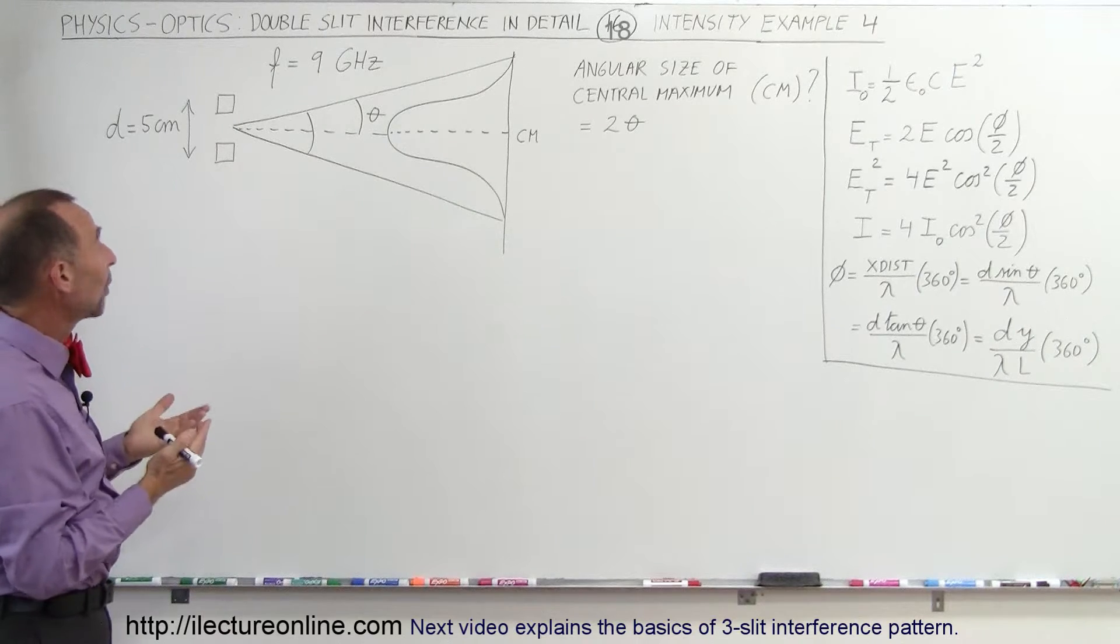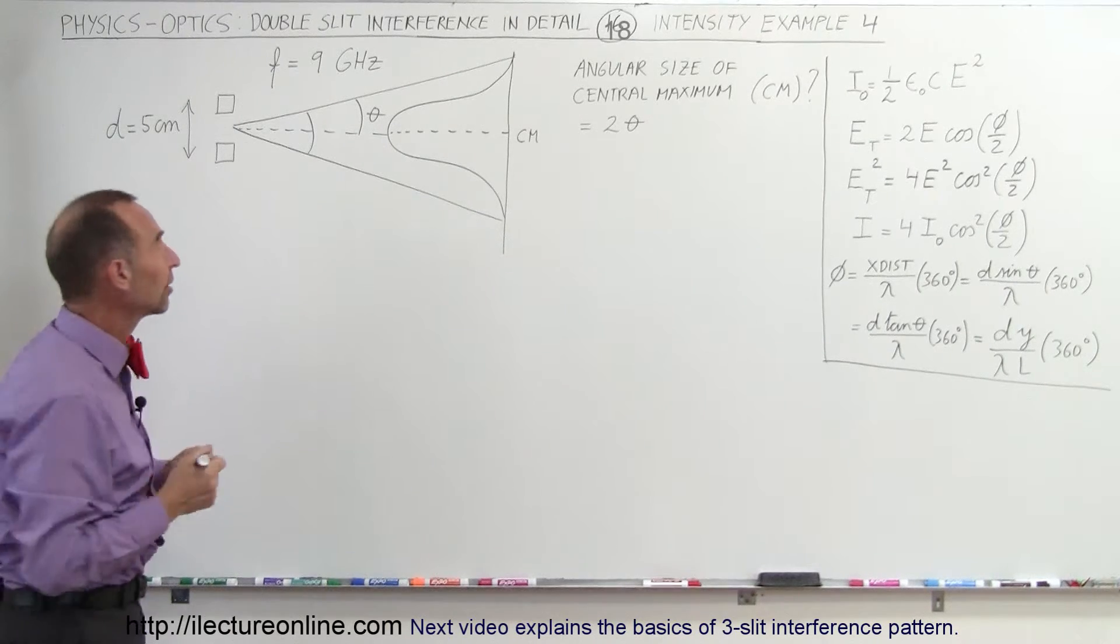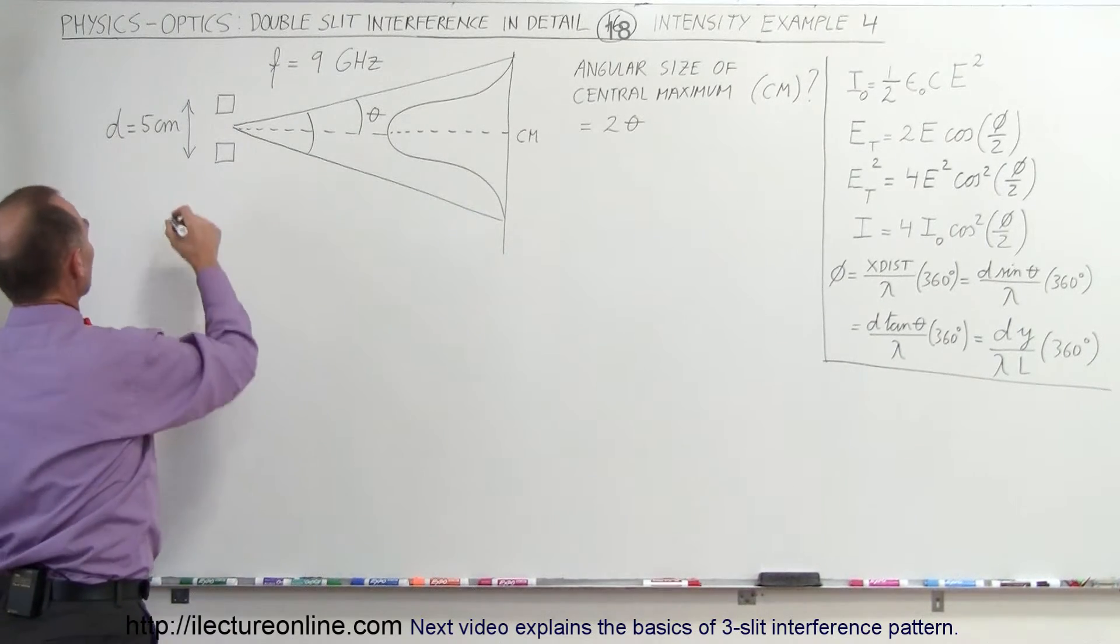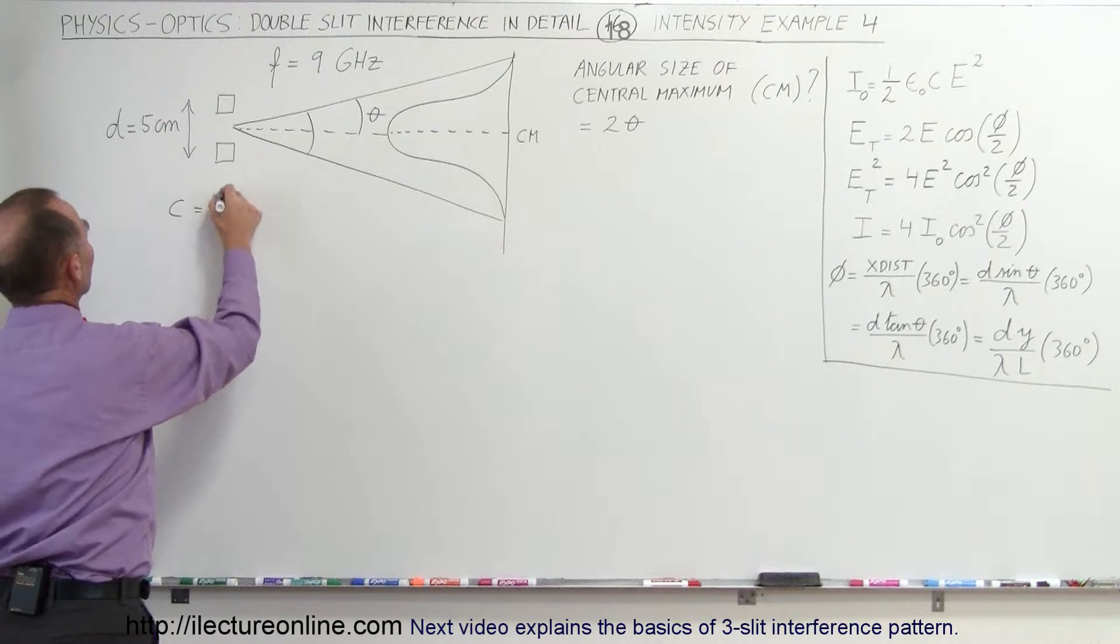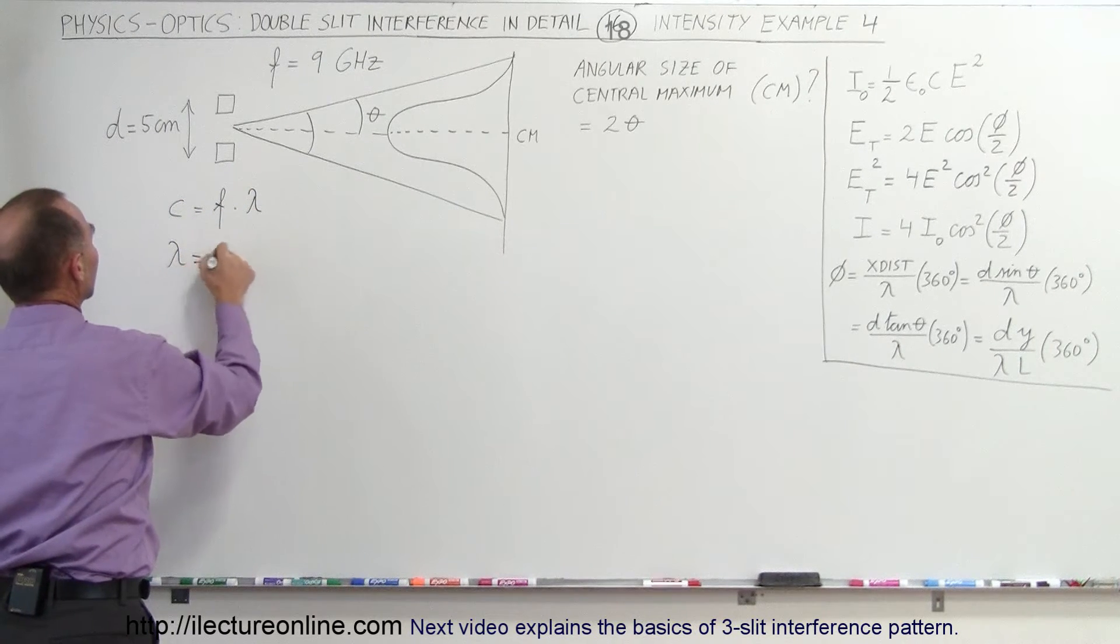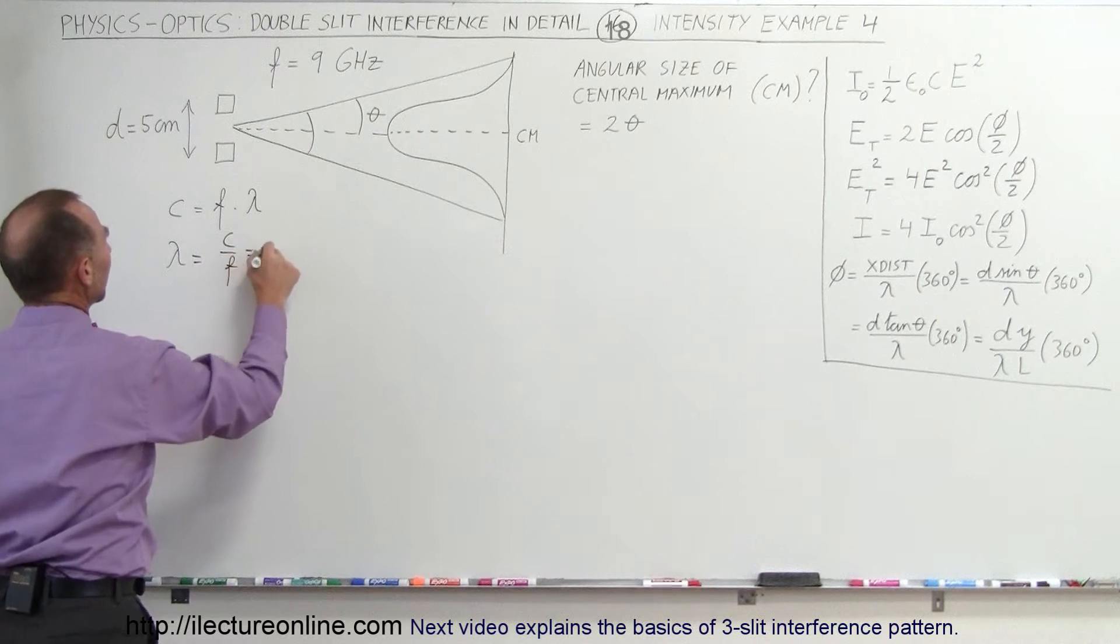First, since we're not given the wavelength, we want to find the wavelength of this antenna pattern. We know that C, the speed of light, is equal to the frequency times the wavelength.